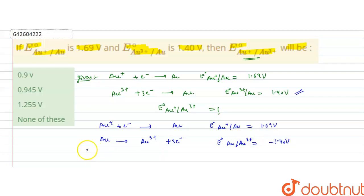If we add these two equations, this AU will be cancelled. We have AU+ giving AU3+ plus 2 electrons. We have to find out E0 for AU+ to AU3+. This is our net reaction.